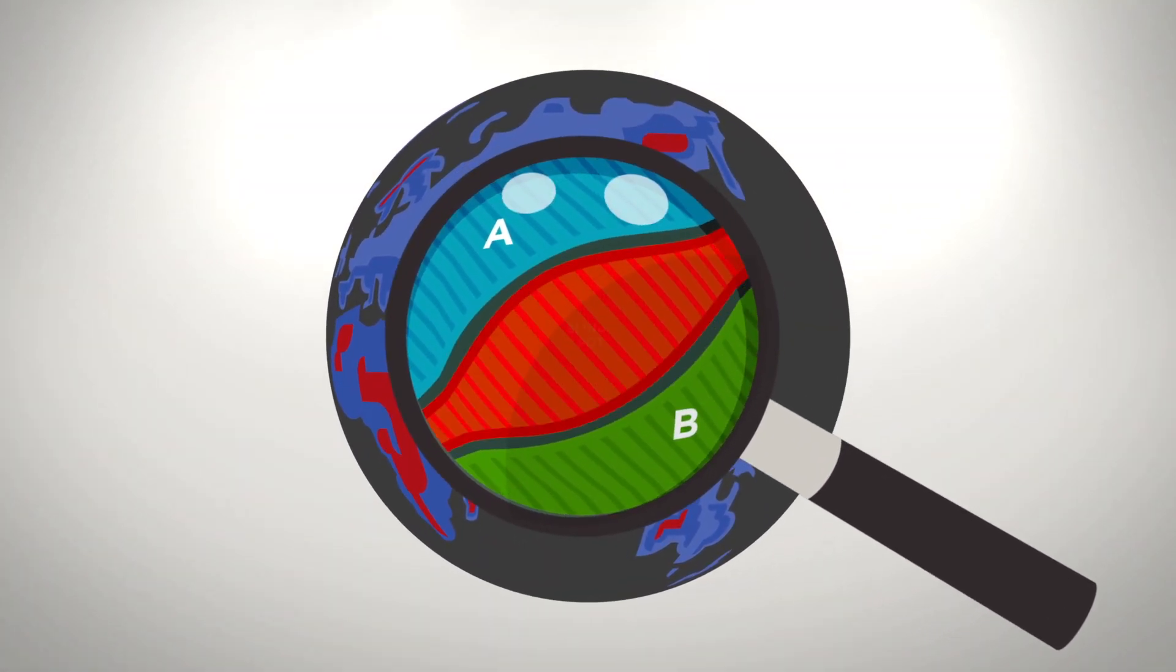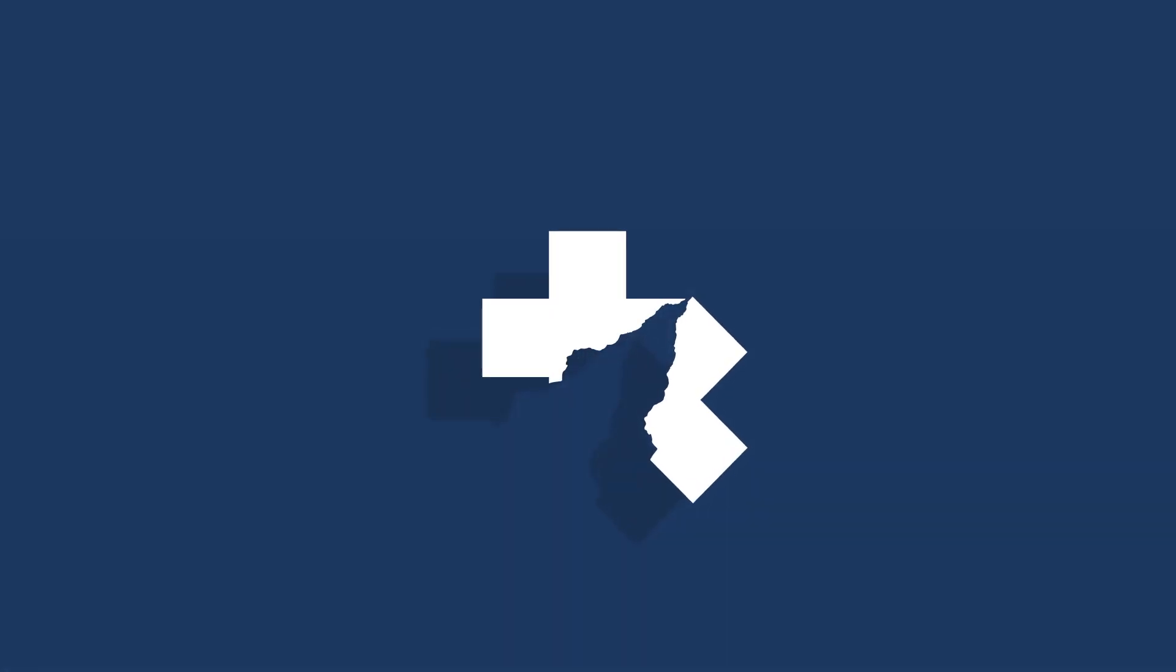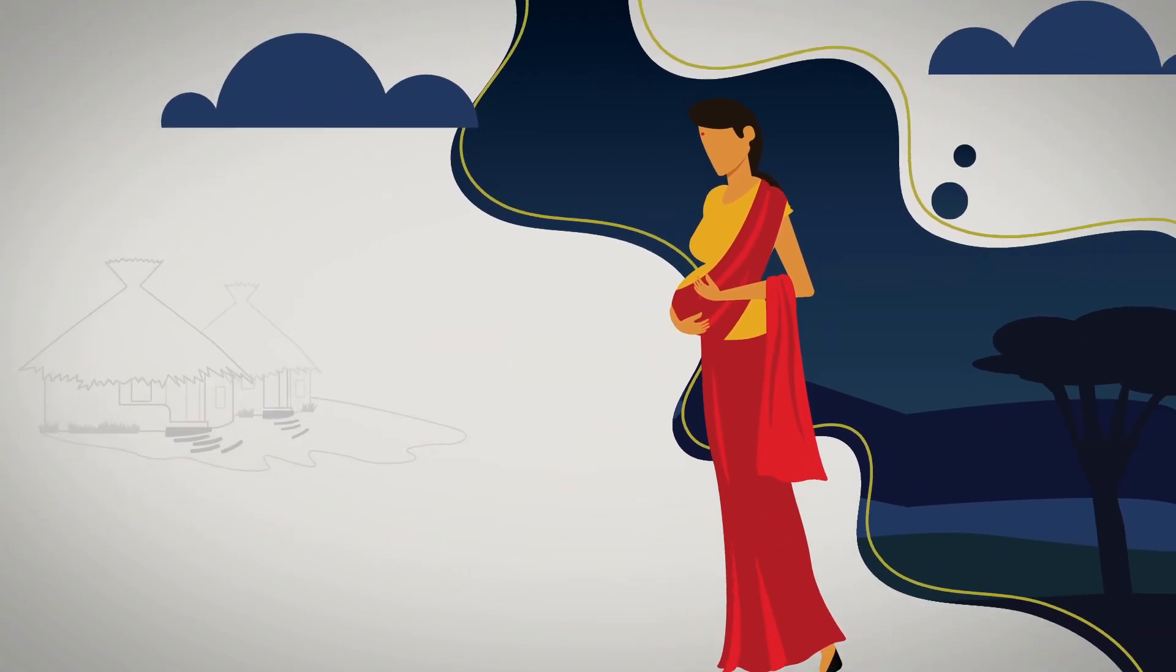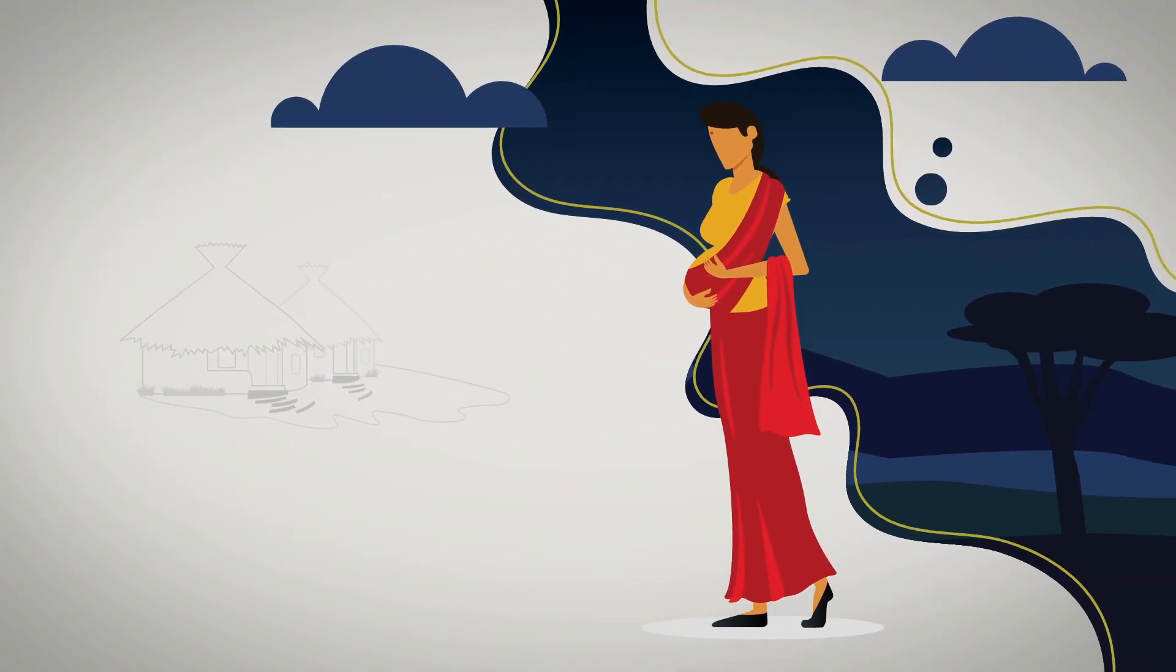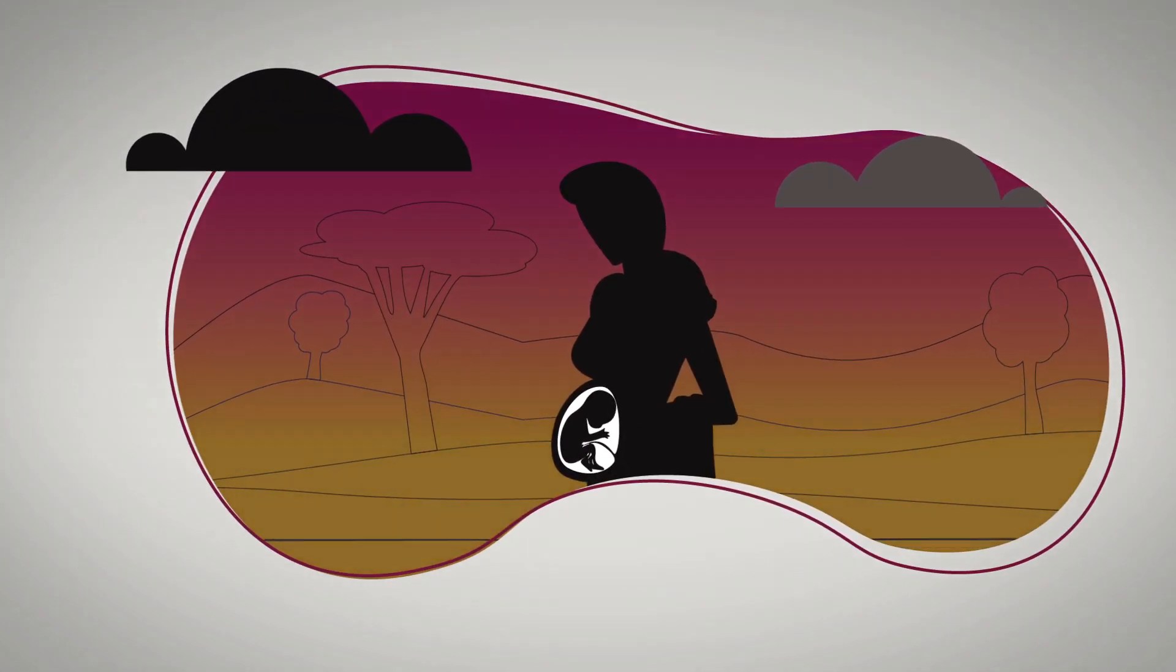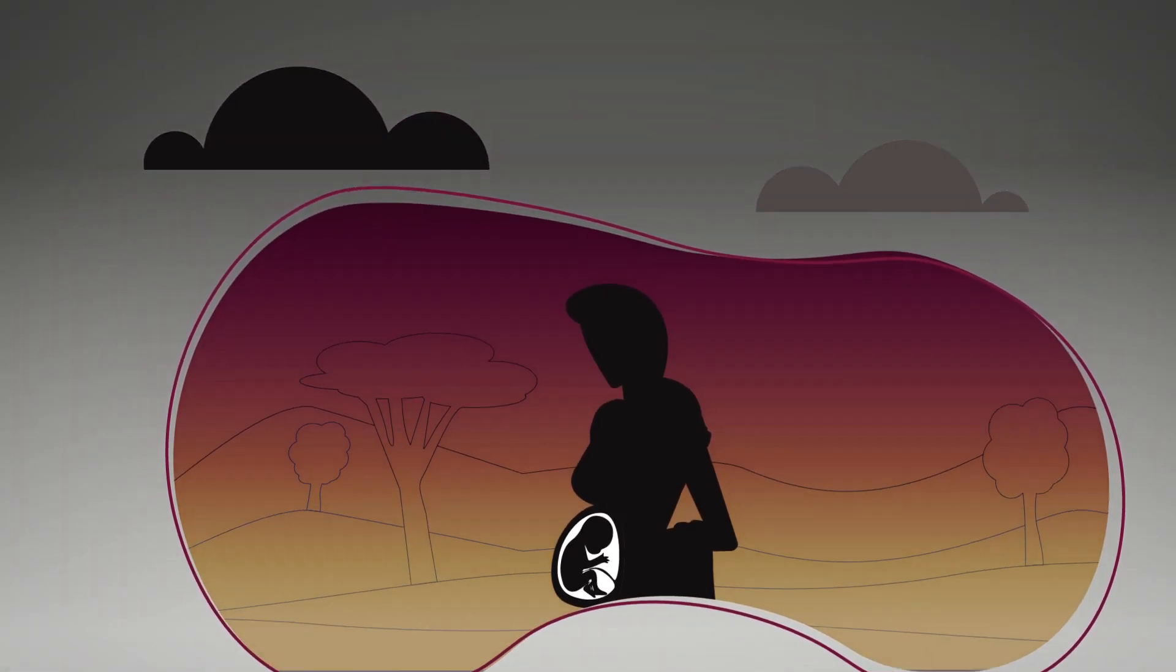These blind spots lead to gaps in health where risks are hidden and the simple quickly becomes complicated. Take Radha for instance. Radha is 25 years old. She lives in a rural part of Northwest India and is pregnant with her third child. She experienced complications with her last pregnancy and she's falling through the cracks.